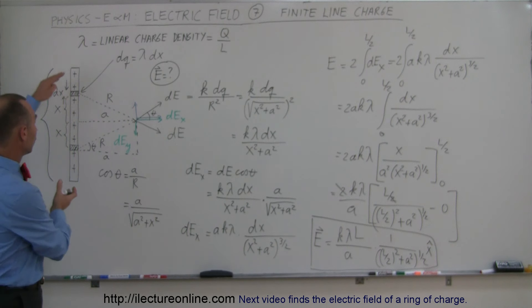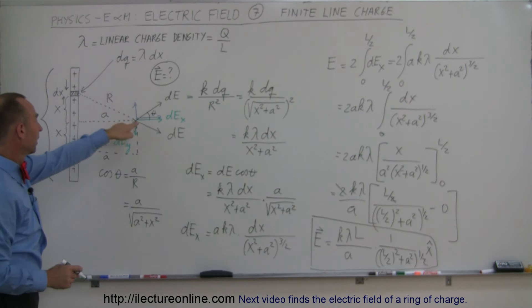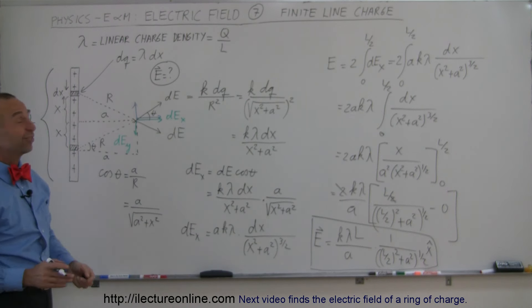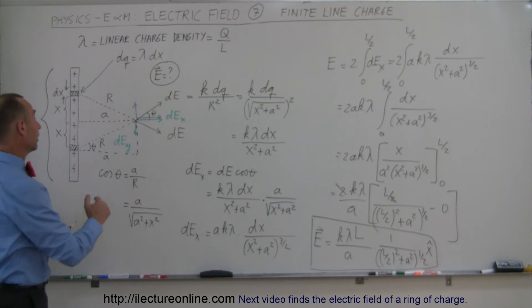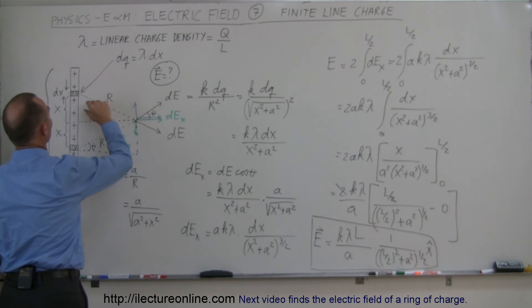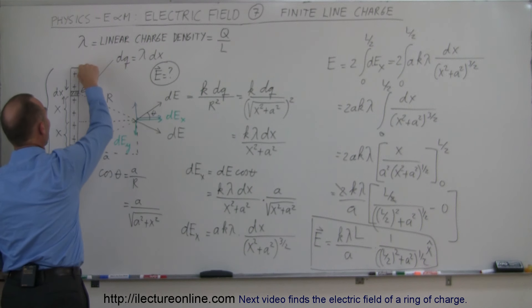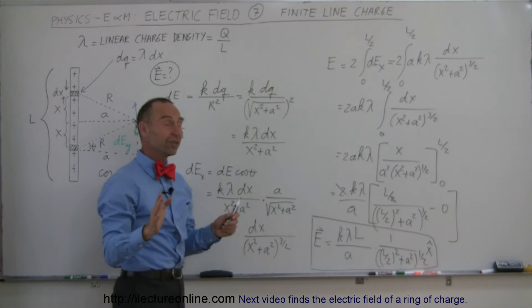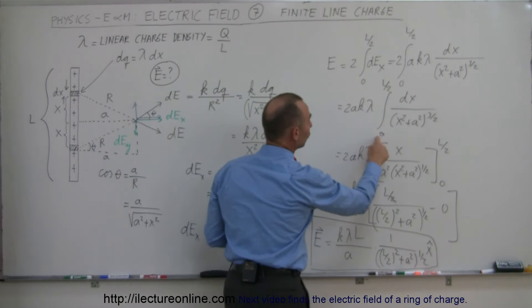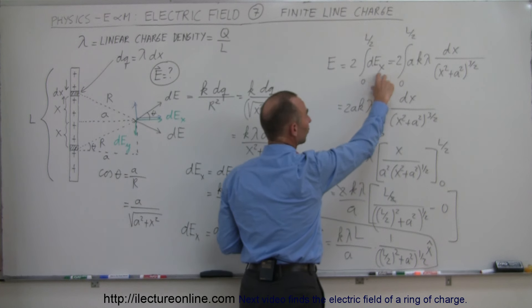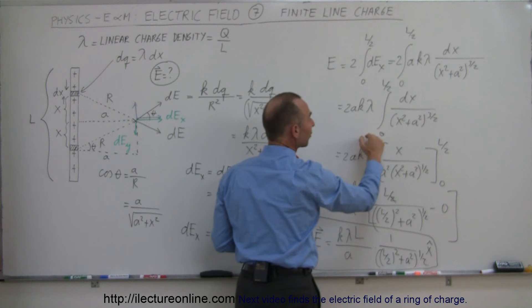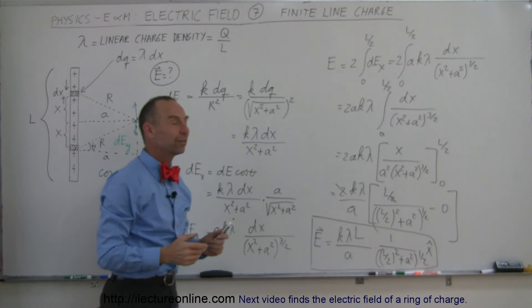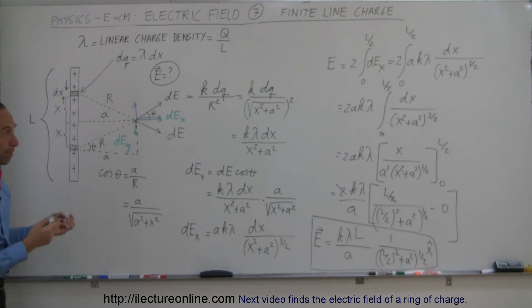That is the electric field due to a finite-length rod of length L, at a distance A away, when the point is exactly at the halfway point. If the point is not at the halfway point — say it's offset — then you integrate from that location to the top of the rod and from that location to the bottom, with two different limits: a positive fraction of L and a negative fraction of L. There will be a bit more algebra, but that's how you handle that case.